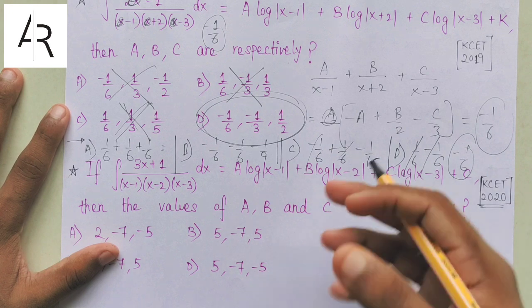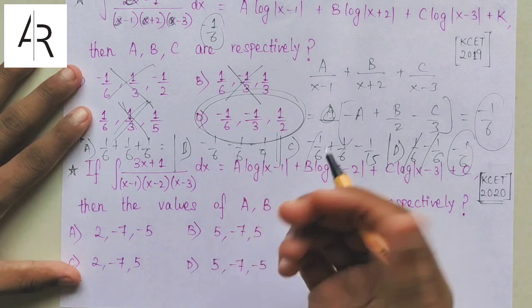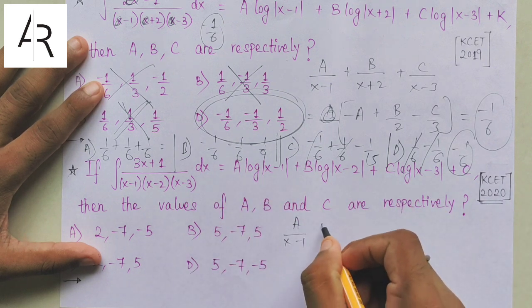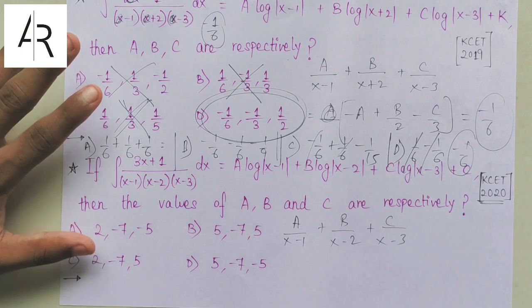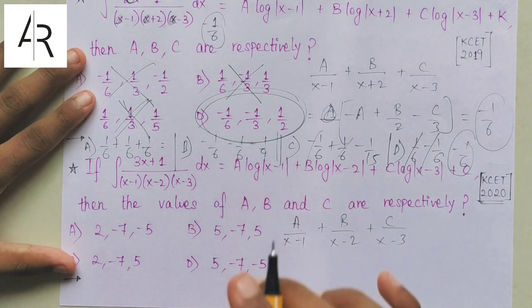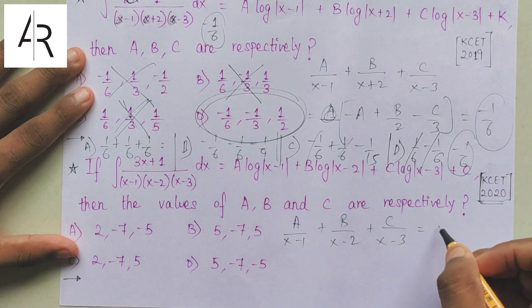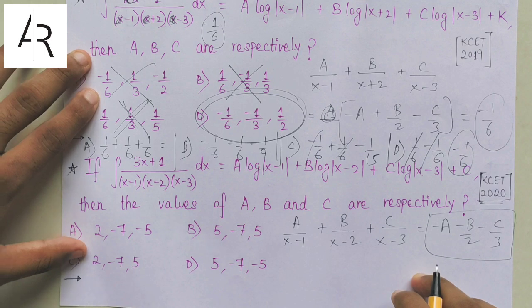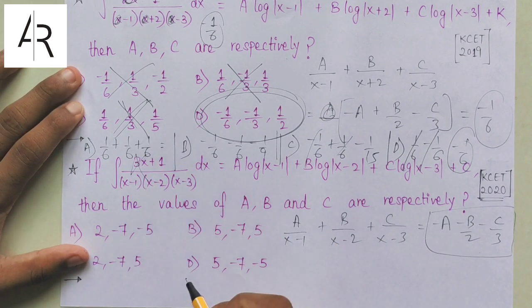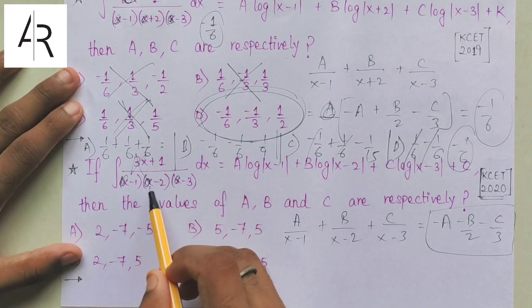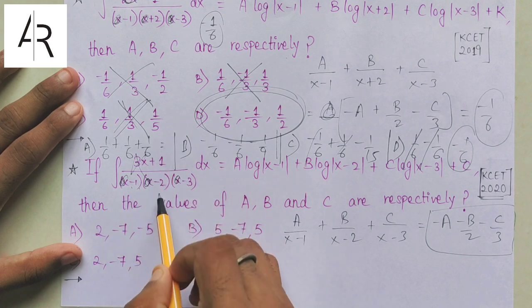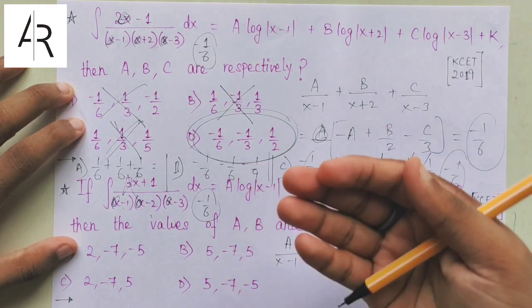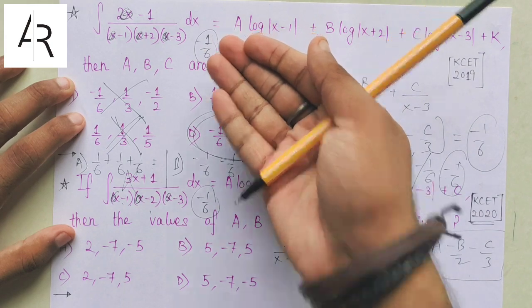Now I will show you the solution using the same trick. If I differentiate this, I get A/(x−1), then B/(x−2), then C/(x−3), and the constant differentiates to 0. Putting x=0 gives −A, −B/2, and −C/3. On the original side, putting x=0 gives −1/(−1)(−2)(−3), which is −1/6. This is also coming as −1/6, similar to the 2019 question. You can see the pattern - KCET papers often repeat questions from previous years with just a few values changed, like x+2 changed to x−2.